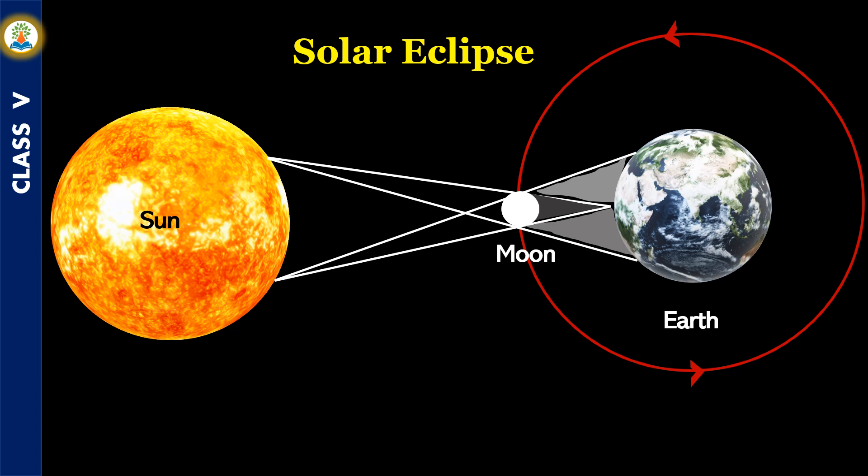A solar eclipse may be total or partial. In a total solar eclipse, the Sun is not visible at all. In a partial solar eclipse, a part of the Sun is visible. Solar eclipse occurs only during the daytime on a New Moon day.